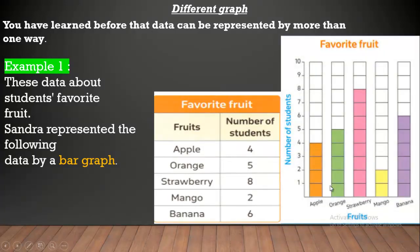We can represent it in a bar graph like this graph. Horizontally, we write fruits like apple, orange, strawberry, mango, and banana.